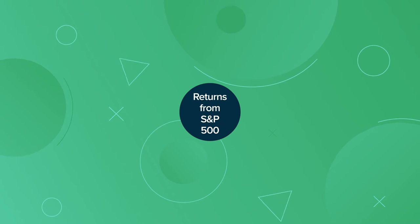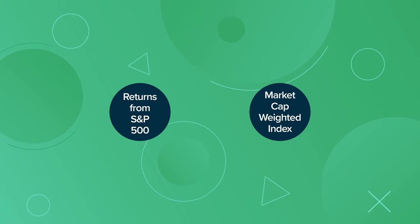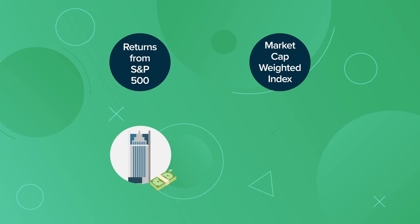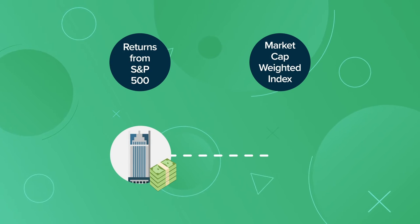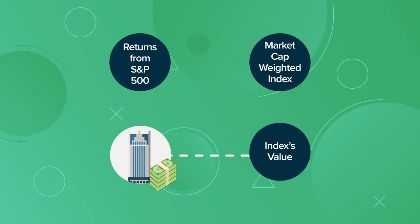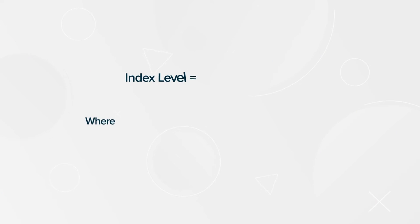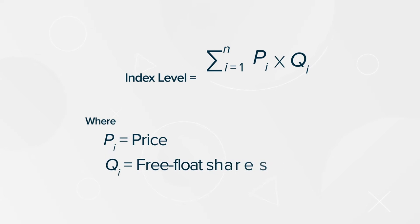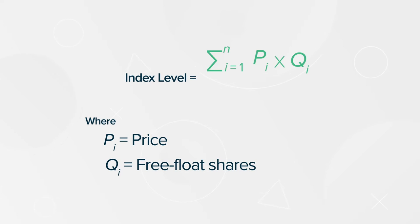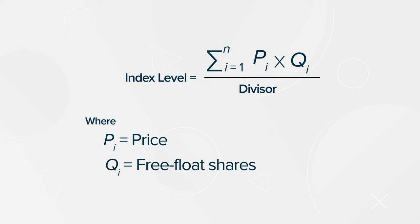The S&P 500 is a market-cap weighted index, meaning companies with the highest valuations have the most impact on the index's value. To calculate the index value, take the price of each share times the number of shares that can be traded on the open market — known as float — to give you a company's float-adjusted market cap. Then add the value of all the float-adjusted market caps of the companies in the S&P 500 and divide by the S&P 500's divisor.